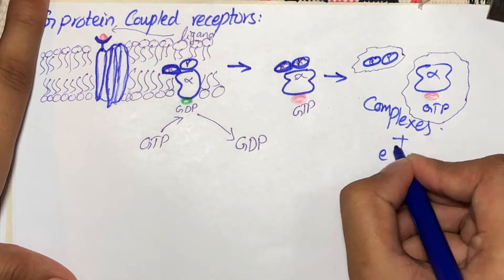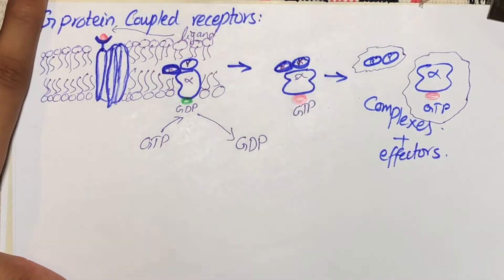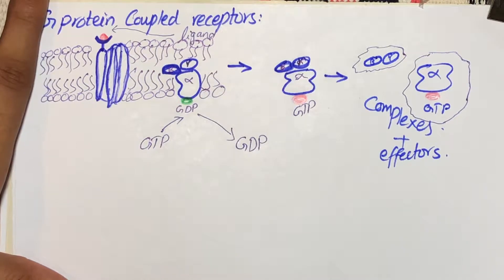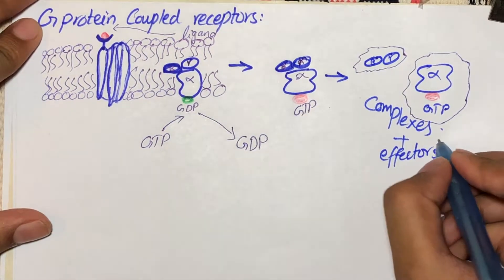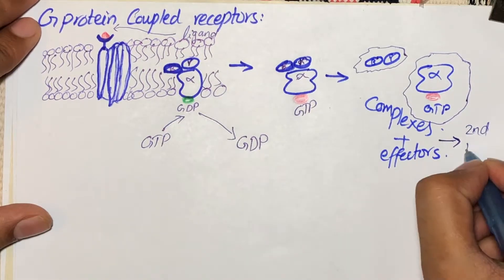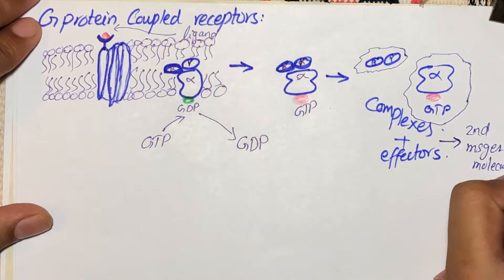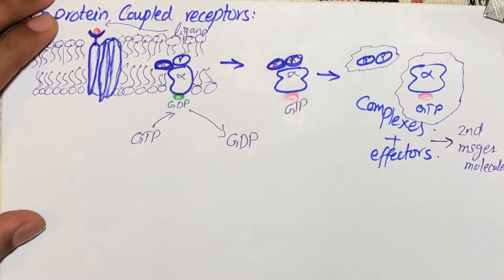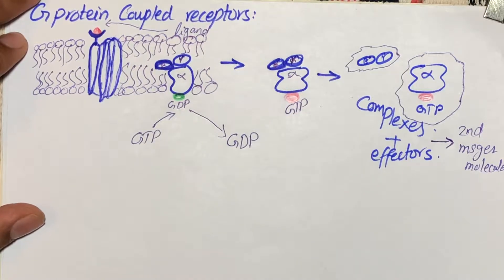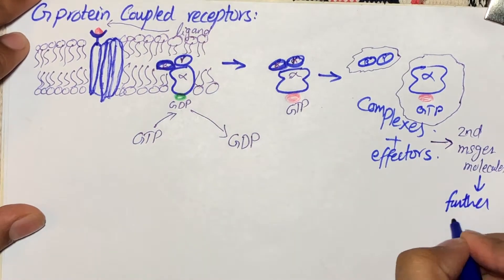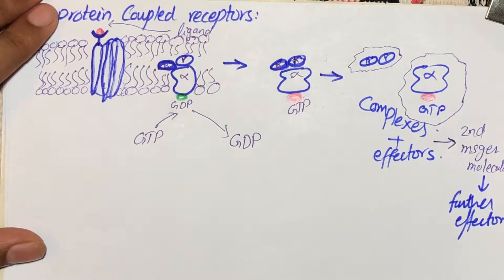These two complexes interact with the effectors and cause further action inside the cell. When there is interaction between these complexes and effectors, there will be production of second messenger molecules. These messenger molecules may further cause the activation of other effectors present in the cell, producing a signal cascade effect — increasing the cellular response and transmitting the signal from outside to inside the cell.